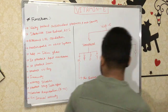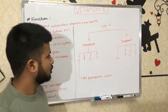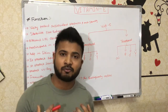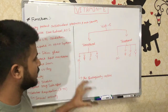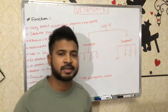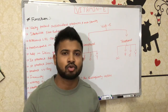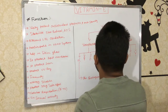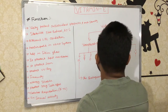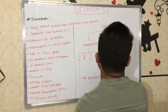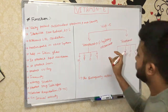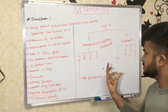Now we'll discuss how alpha-tocopherol performs its function. The active tocopherol is a derivative of the six-hydroxychroman ring. According to chemistry, it is a six-hydroxychroman ring, and due to this chroman ring it has very potent antioxidant properties.